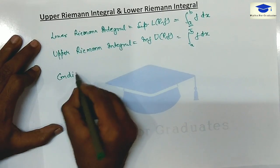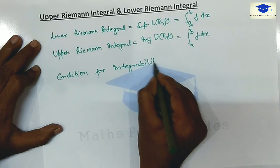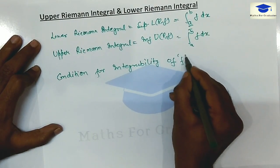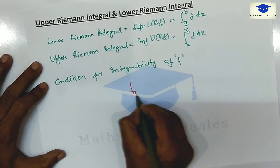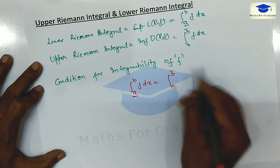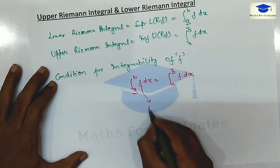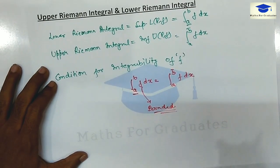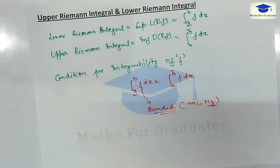The condition for the integrability of f: a function f is said to be Riemann integrable if the lower Riemann integral equals the upper Riemann integral. One thing to keep in mind is that f must be bounded; otherwise, the infimum mⱼ of the function on each subinterval won't exist. So the function must be bounded.